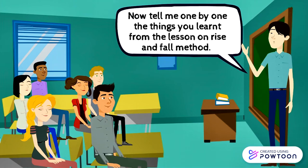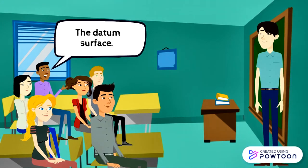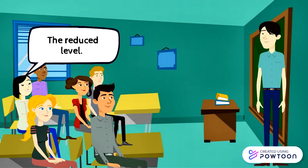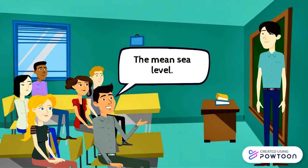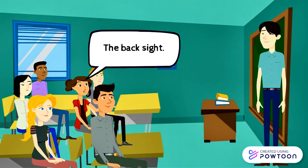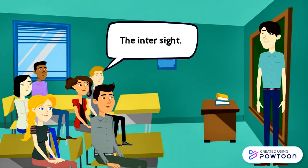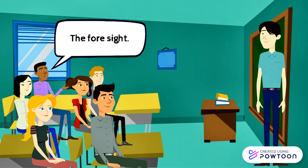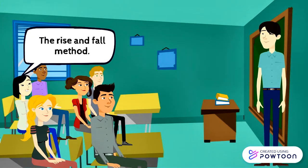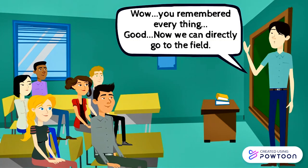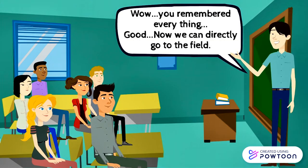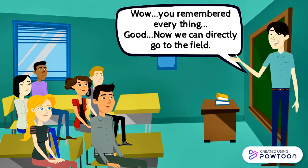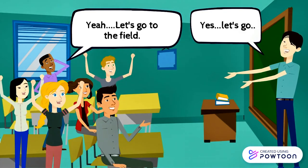Now tell me the things you learned from the lesson on rise and fall method. The students recall: the datum surface, the reduced level, the benchmark, the mean sea level, the backsight, the intersight, the foresight, the rise and fall method, and the changing point. You remembered everything — good. Now we can directly go to the field.